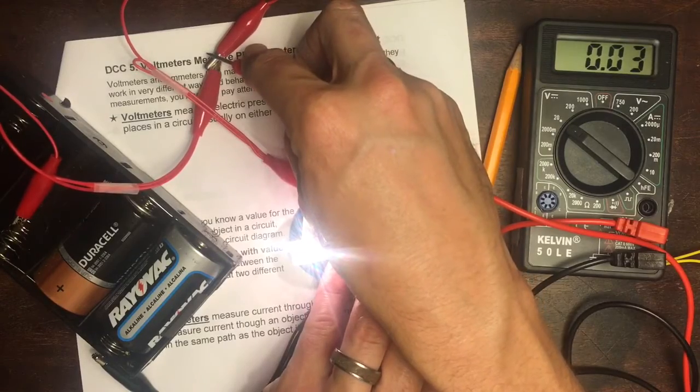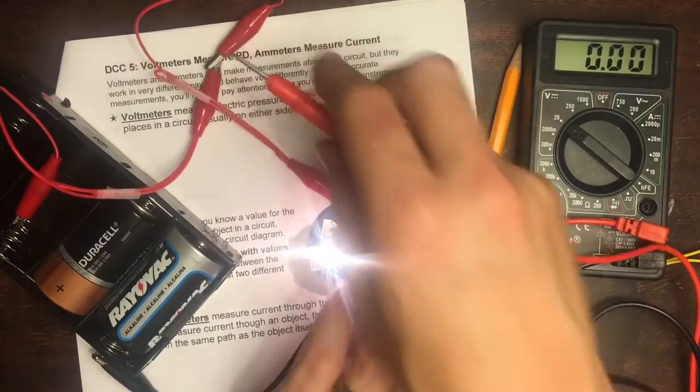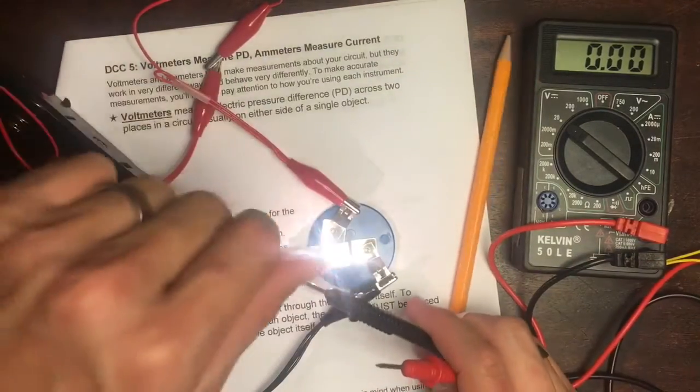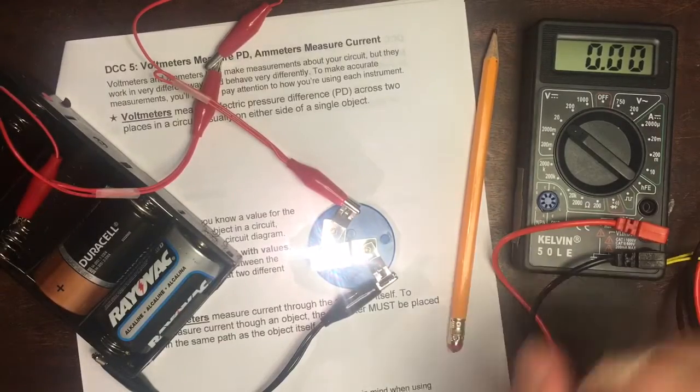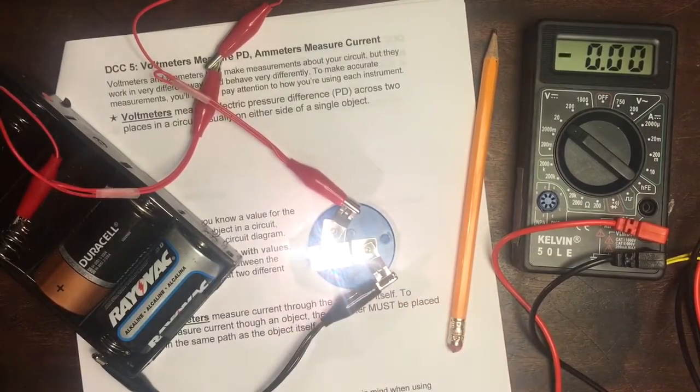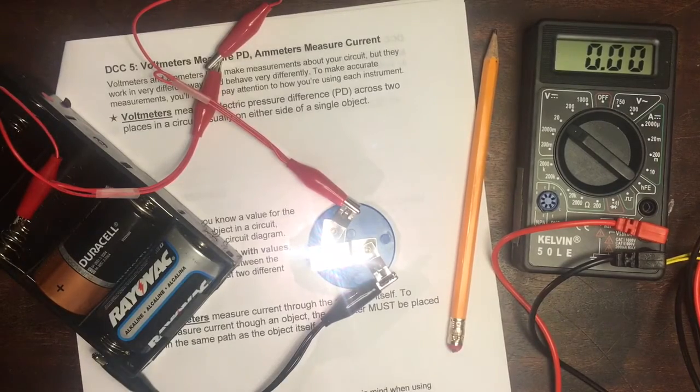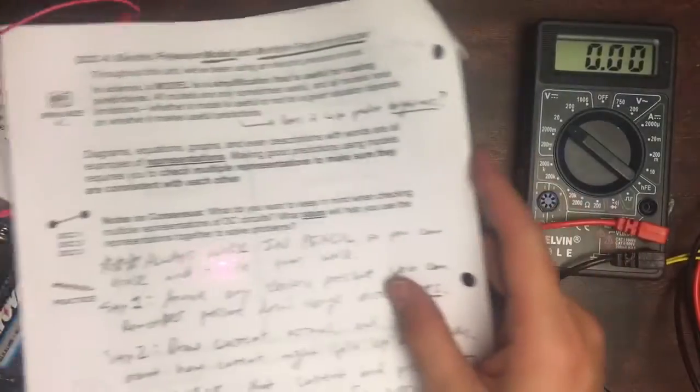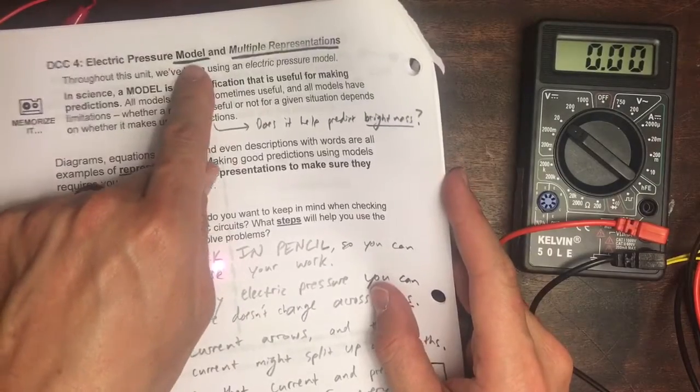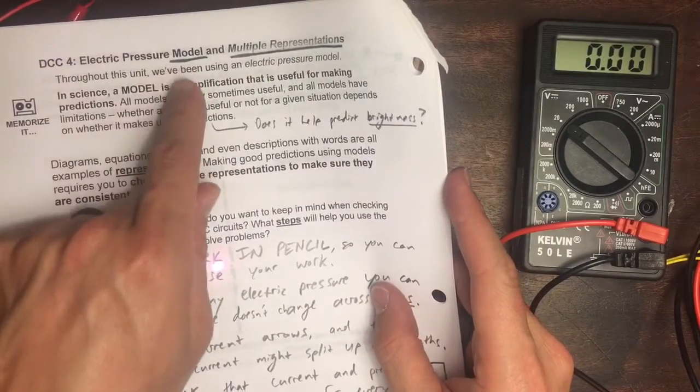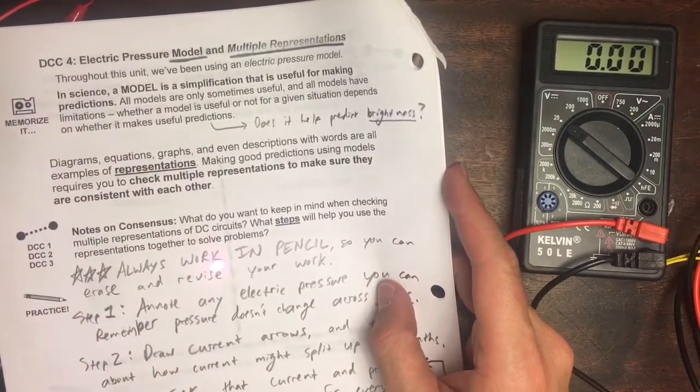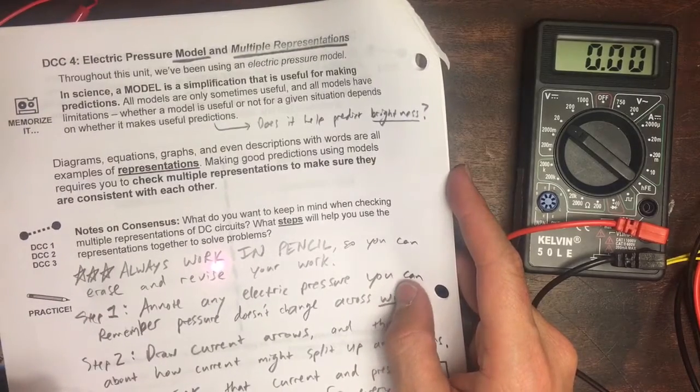Like this, there you go, 0.03. We have been assuming that the pressure difference across wires is zero. That's an assumption that we made, but I want to point out that we are using a model, and part of our electric pressure model is the assumption that pressure difference across wires is zero.